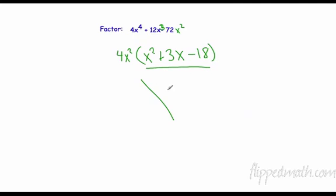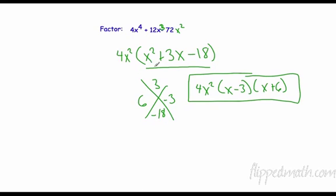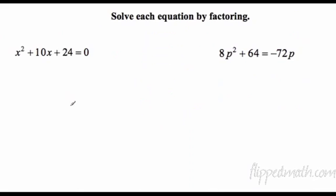Now we have to factor this. So we have negative 18 add to 3, that's 6 and negative 3. So we have 4x²(x - 3)(x + 6). I see a lot of you forget about this GCF that you factored out, but that's important. It needs to be in your answer.